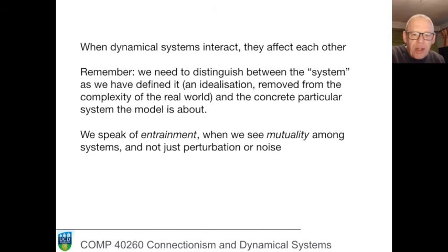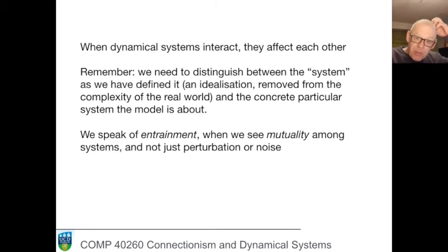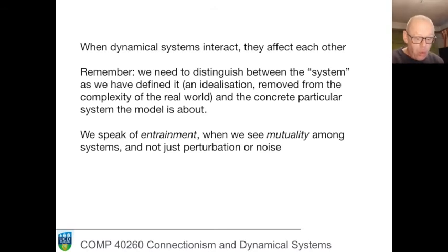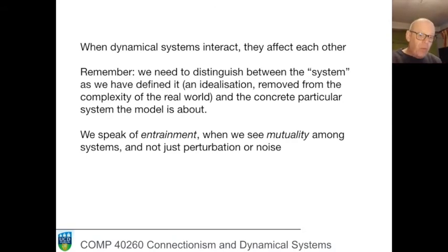It is a generic property of dynamical systems that if they can interact, they will influence one another. If there's some sort of compatibility between them, they are quite likely to fall into some kind of intelligible relationship. If they are entirely of different natures, no obvious coherence will result. But if like interacts with like, we tend to find the emergence of intelligible patterning in the behavior.